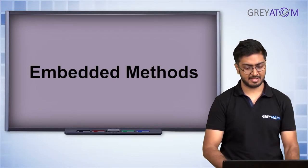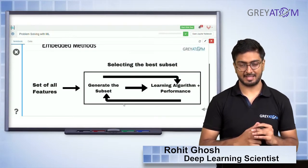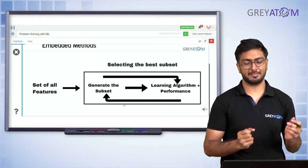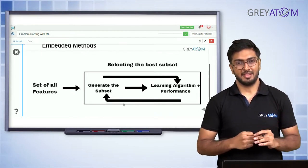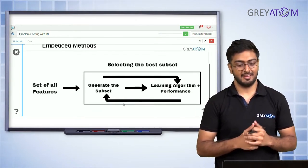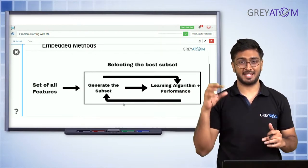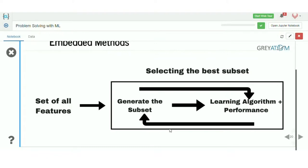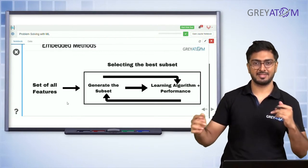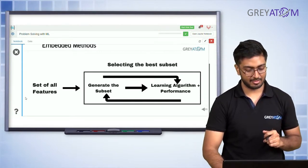Now the last part of the session is embedded methods. The wrapper method was basically where you have features and each iteration you're dropping features which are worse performing. Embedded methods are basically methods where the algorithm itself already has feature selection as part of it — so it's a combination of wrapper as well as filter methods. The learning algorithm already does some kind of feature selection in itself.